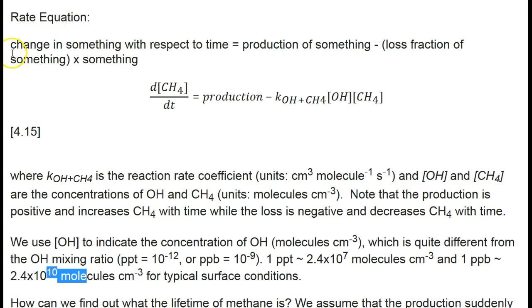The change of something with respect to time equals the production rate of something minus the fraction of something that is lost each unit of time multiplied by the amount of something. Note that the loss rate of something is always proportional to something. That something can be anything.